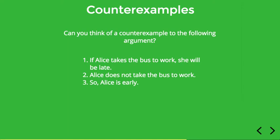Here's a similar argument: If Alice takes the bus to work she'll be late; Alice does not take the bus to work, so Alice is early. Once again we can show that this argument is invalid. Just because Alice does not take the bus to work doesn't mean she gets there on time. Maybe it's a beautiful day and she decides to walk, or maybe she just decides to stay home. There are a lot of counter examples to this argument, so it's clearly not valid.